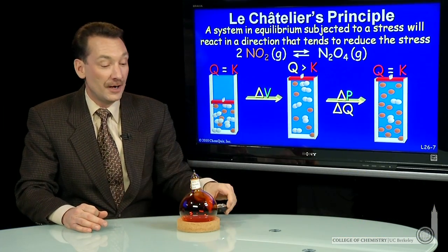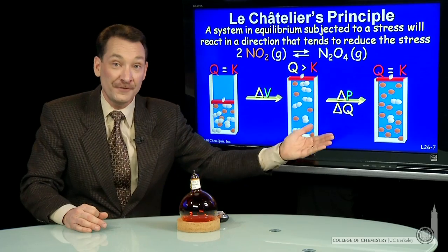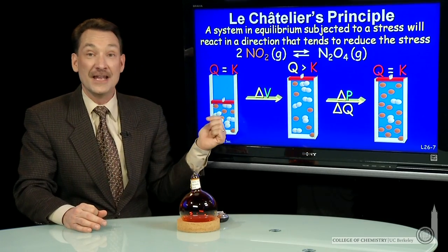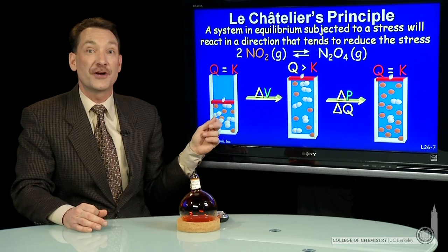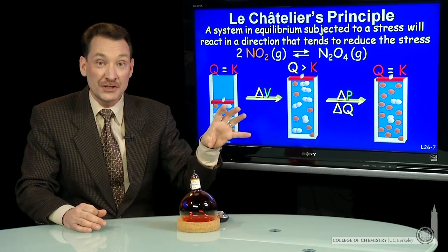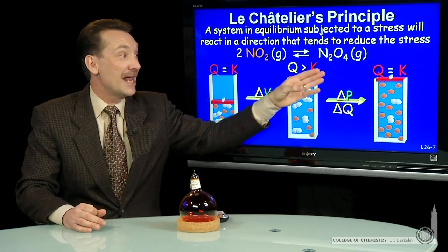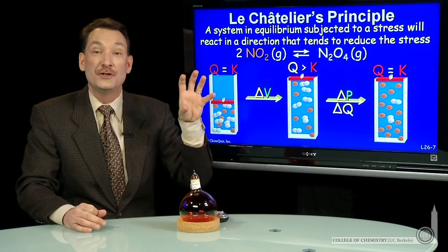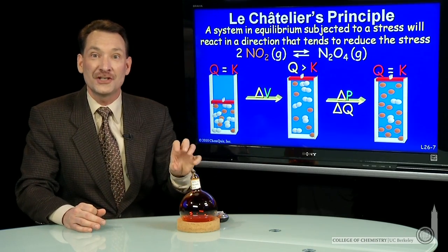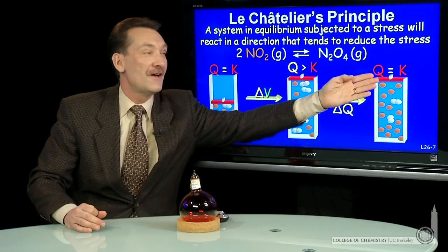Now, what you'll have is a different partial pressure of NO2 and a different partial pressure of N2O4 than you started here. But the quotient, the reaction at equilibrium, has the same value. So two different numbers in the expression that give the same quotient value for K.